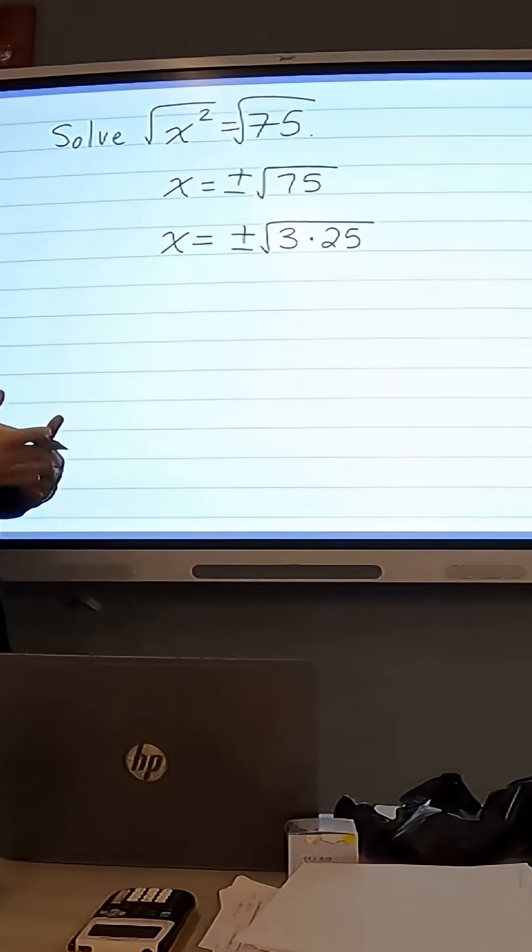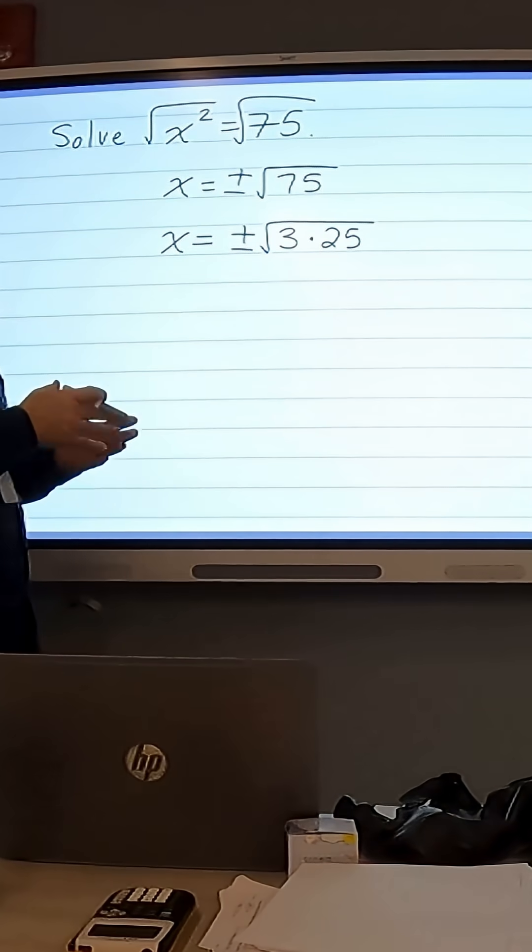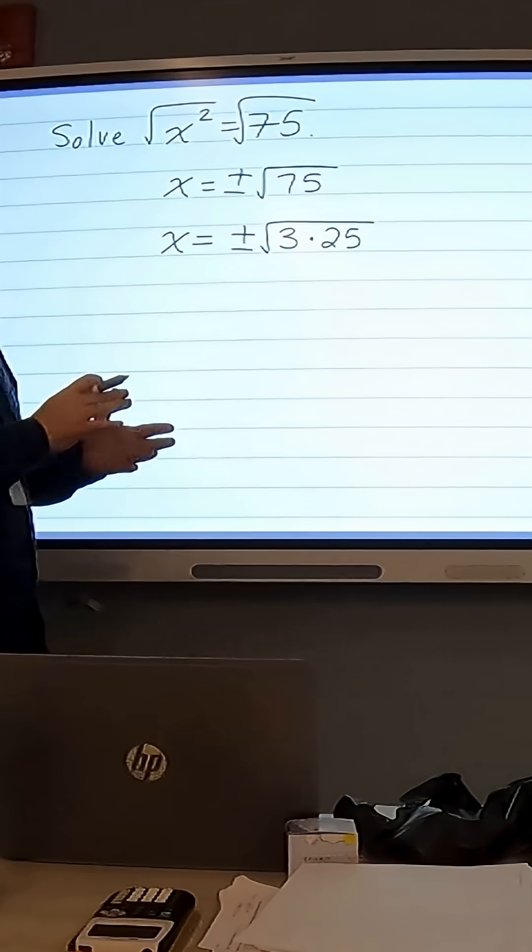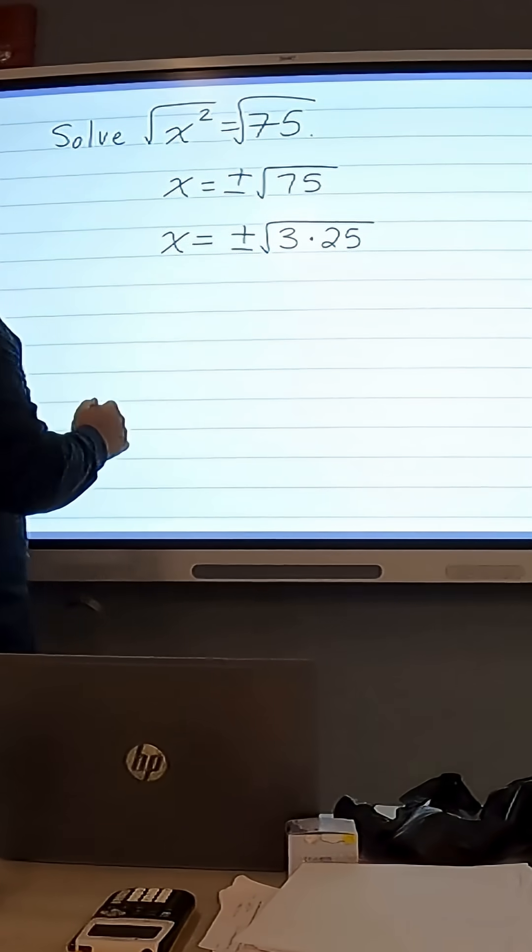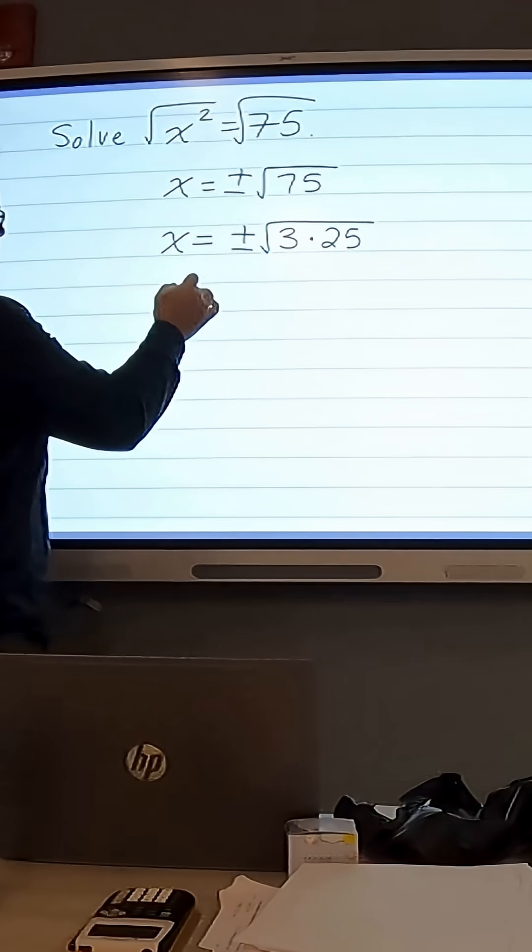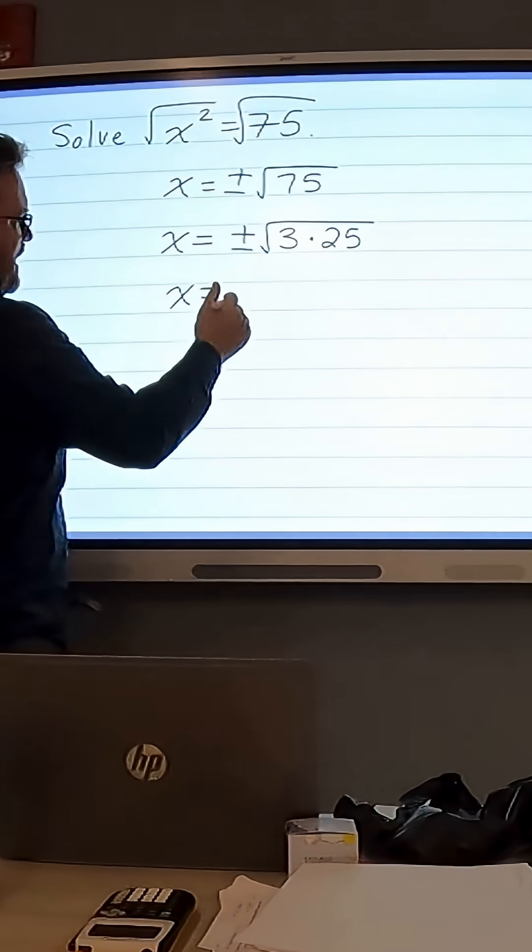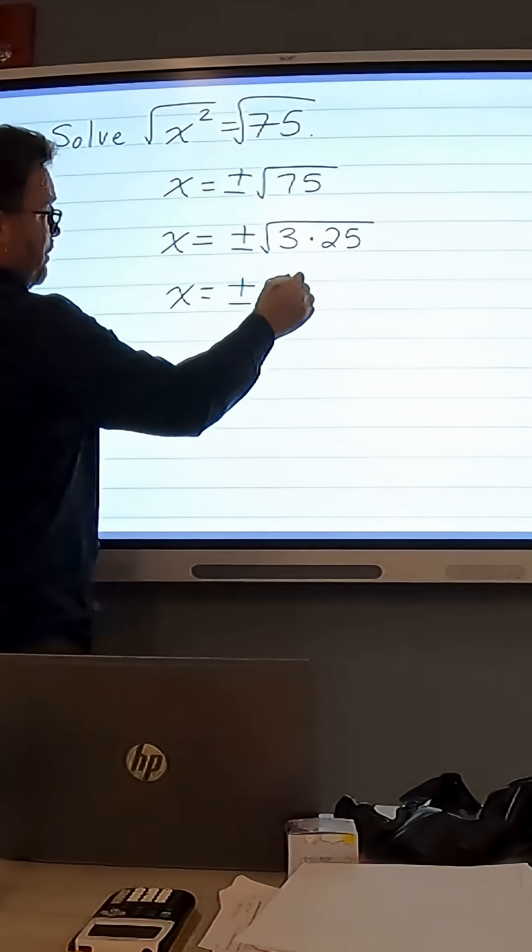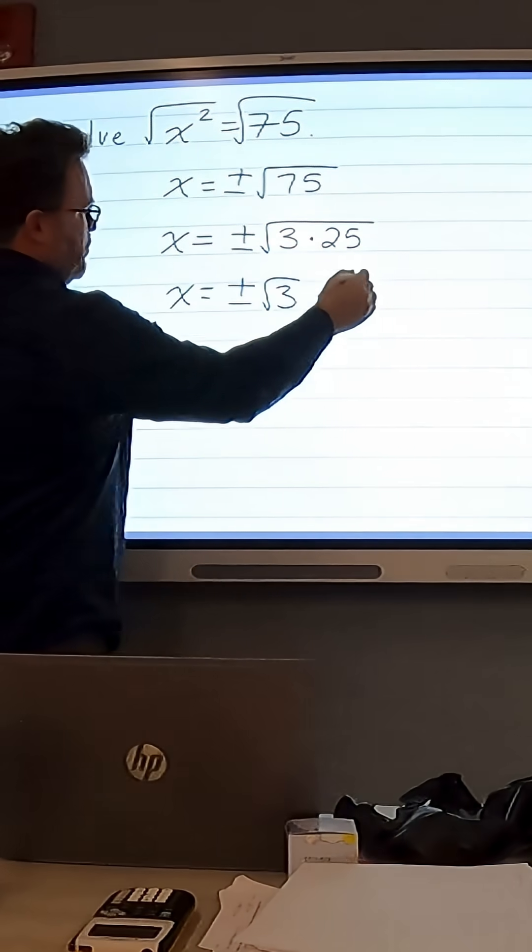The reason why I like breaking that down that way is the square root of 25 is 5, so we can take that out of the square root. So another way we can write a multiplication inside as the square root of 3 times the square root of 25.